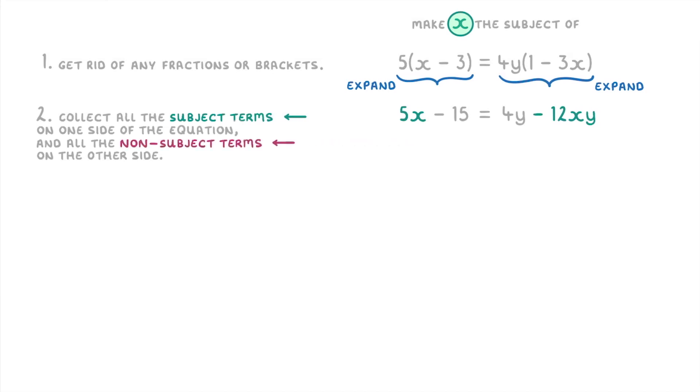Then a non-subject term is just any term that doesn't have the subject letter in it, so the 15 and the 4y. So really we want the 5x and 12xy on one side of the equation and the 15 and 4y on the other side. It doesn't matter which side is which though, so let's just go with the subject terms on the left and non-subject terms on the right, which will involve moving the 12xy term to the left side and the 15 to the right side.